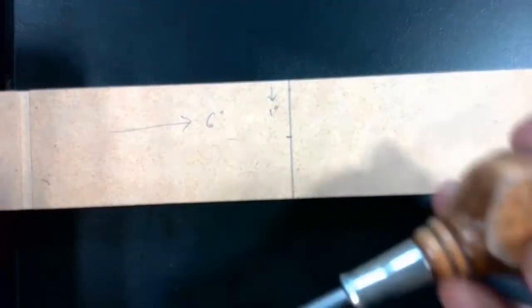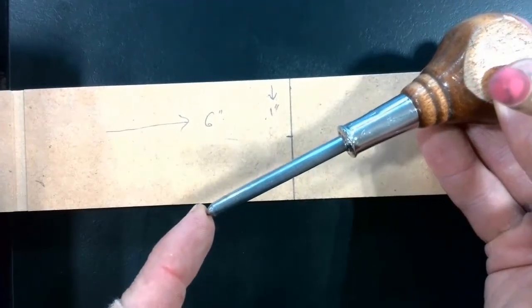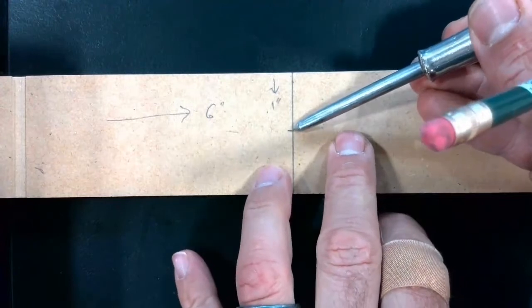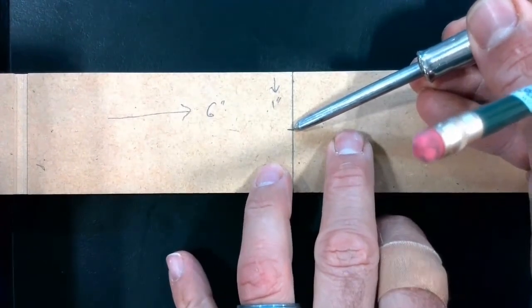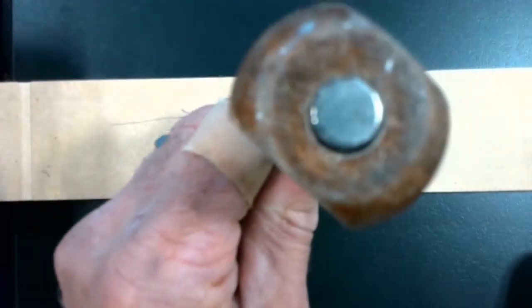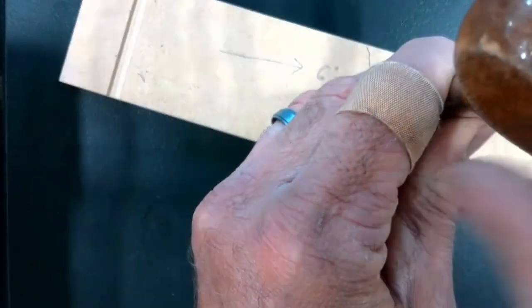So now, I'm going to take this tool called an awl, it's essentially just a sharp metal bar, and I'm going to put the point of my awl right on the intersection of those two marks, and then I'm going to use the palm of my hand to knock this gently.